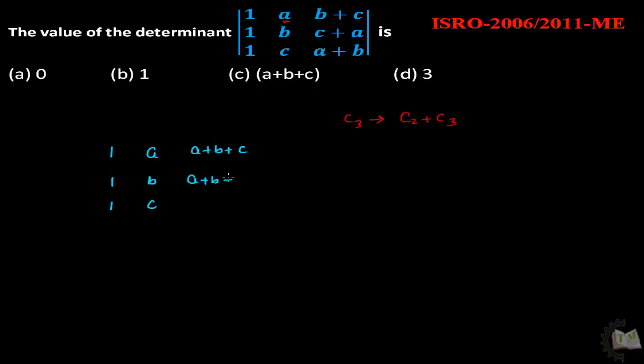And it will also be a plus b plus c, it will be a plus b plus c. Next now you can take this term common because same term repeating in three rows: row 1, row 2, row 3, so I will take this term to outside of the determinant.